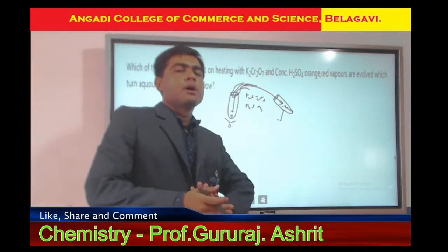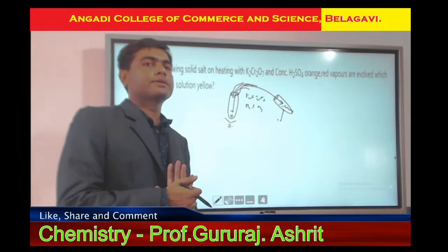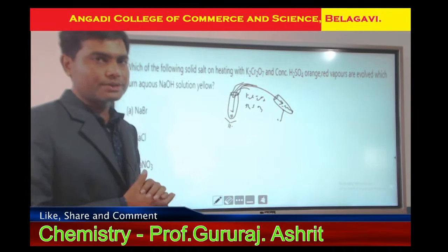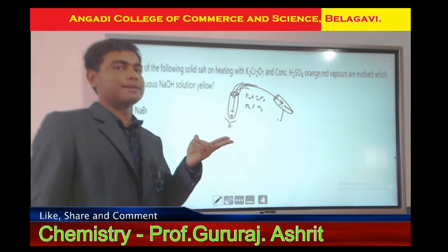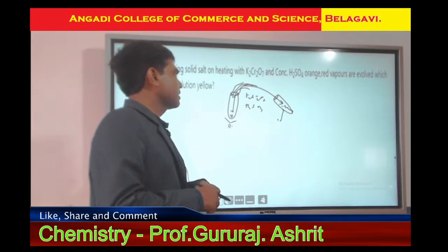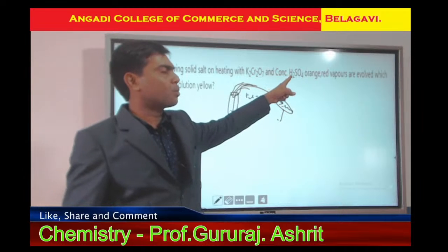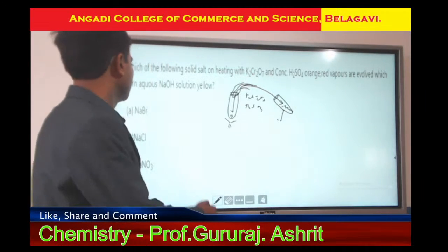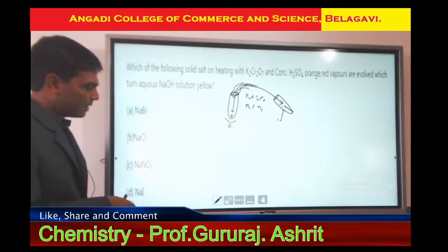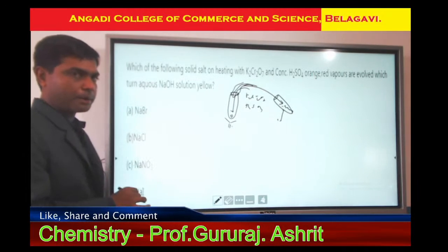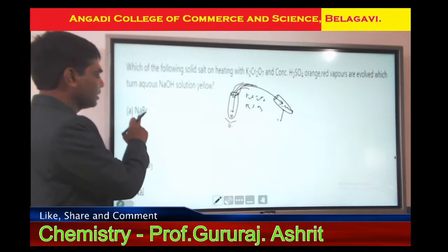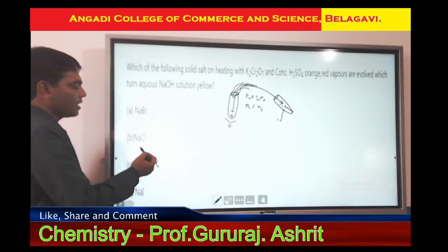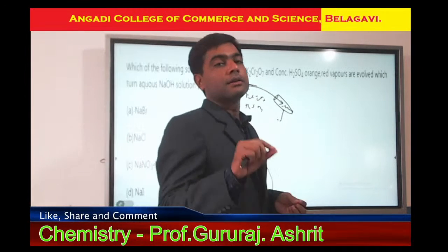The concept here relates to salt analysis — specifically the confirmation test for a particular anion radical. In that test, lead acetate is used, which turns into a yellow precipitate. The mixture of potassium dichromate and sulfuric acid is called chromic acid mixture, which is the best oxidizing agent. Among the four salt options, three are halide salts. All halides can take part in this reaction, but depending on the color, you identify which salt is suitable. The nitrate salt is not suitable because it does not contain a halogen, so the answer is between chloride (Cl) and bromide (Br).